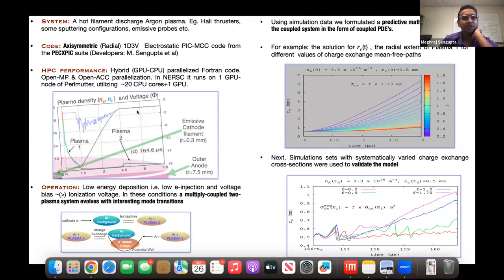And plasma devices where such mode transitions are of interest and of importance are components, certain components of Hall thrusters used in space propulsion, some sputtering configurations like cylindrical magnetrons as well as emissive probes used in plasma measurements.